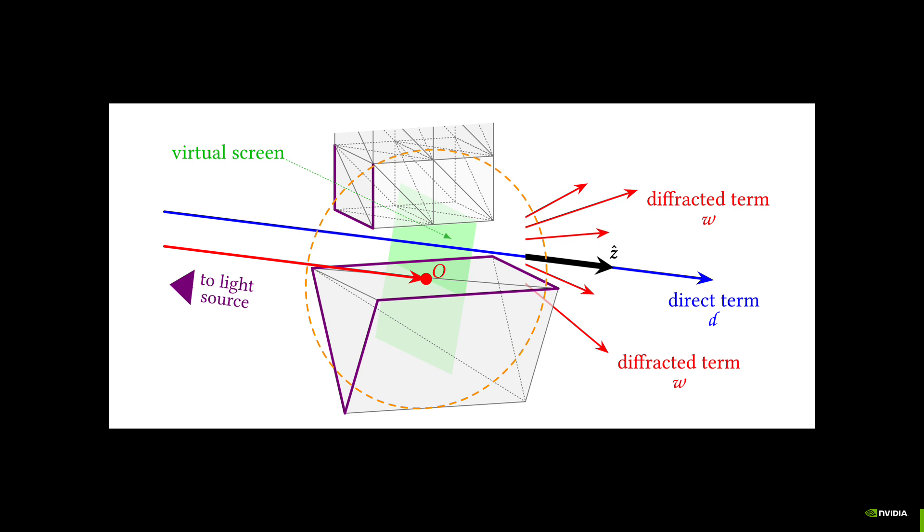we compute the distribution of diffracted energy. Using Monte Carlo integration, we sample a single ray that carries diffracted energy and trace it from the aperture.